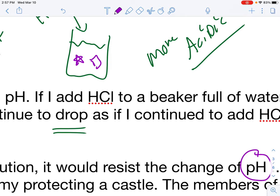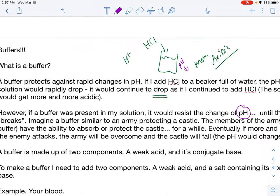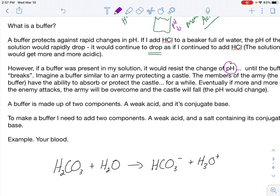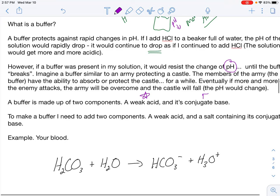So, these components, the star and the square, can resist pH change for a while, until they basically get used up. And if they get used up, the buffer is gone, and then my pH would start to drop. Because I'm adding an acid, and the lower the pH you have, the more acidic something is. Now, I mentioned it was made up of two components, a weak acid and its conjugate base. Let's pretend like the star is my weak acid, and the conjugate base is a square.